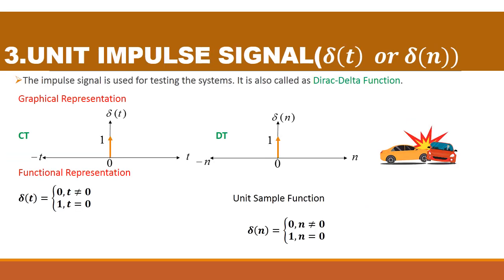The next signal is the unit impulse signal, denoted as δ(t) or δ(n) — δ(t) for continuous time and δ(n) for discrete time. This signal is very important and is used for testing systems. It is also called the Dirac delta function. As an analogy, when two cars meet in an accident, all of a sudden within a fraction of a second there is a great force between them — only at t = 0 you have the value. If the magnitude value equals 1, it is called the unit impulse signal.